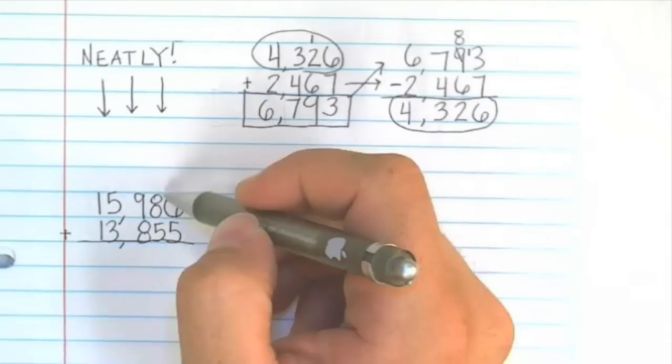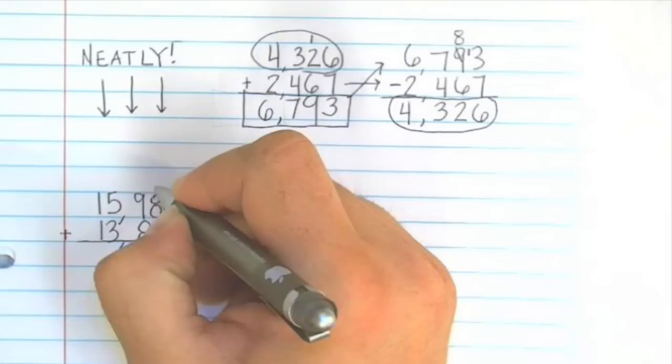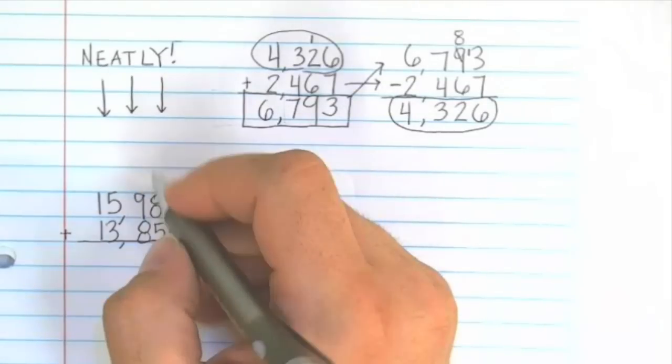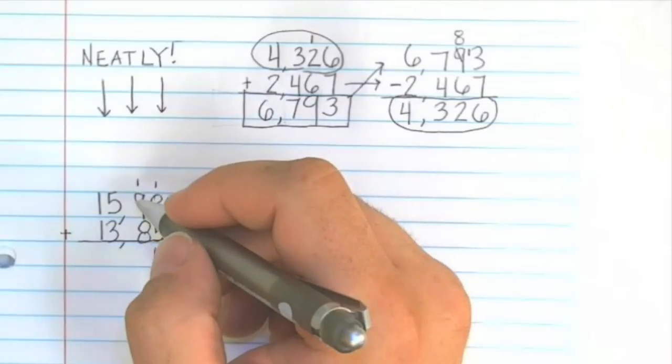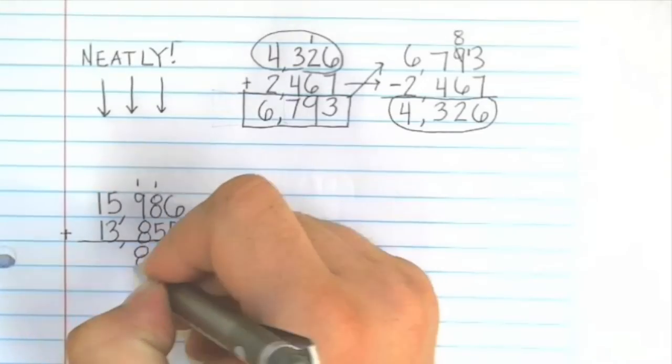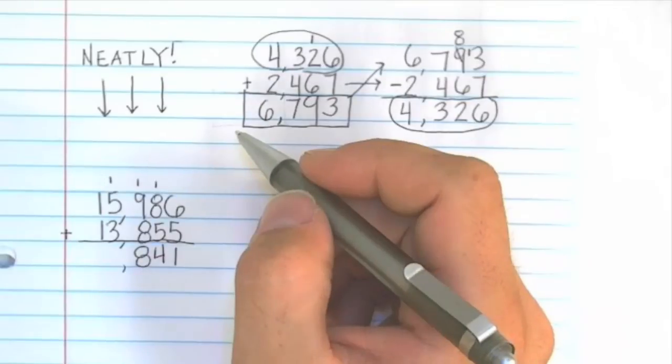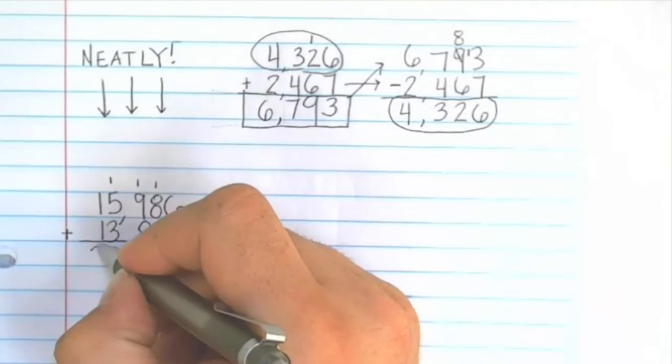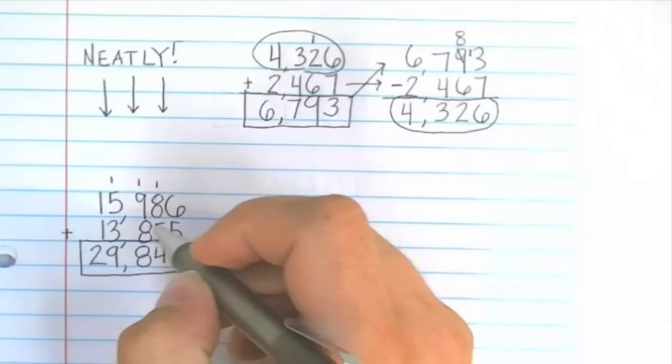6 plus 5, we're starting in the ones place, as always. 6 plus 5 is 11. We put 1 down here. We carry the 1. 1 plus 8 is 9. 9 plus 5 is 14. We put the 4 down. Carry the 1. 1 plus 9 is 10. 10 plus 8 is 18. So we put the 8 down here. Put the comma. Carry the 1. 1 plus 5 is 6. 6 plus 3 is 9. 1 plus 1 is 2. So we put this down.